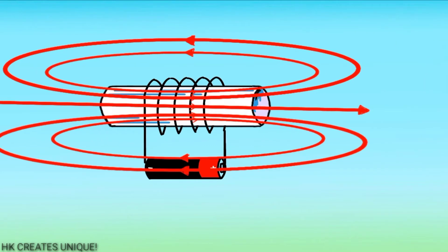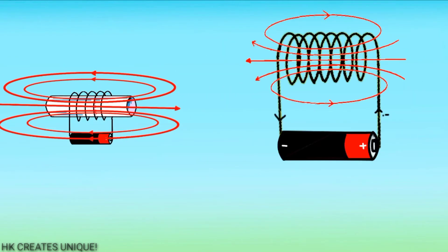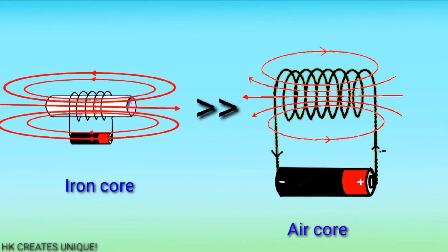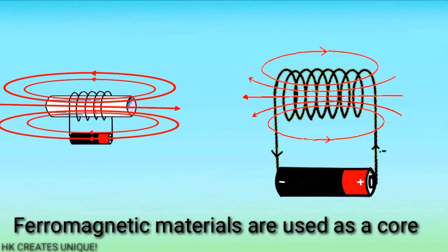And creates stronger magnetic field. The result is an electromagnet having much more strength compared to an air core electromagnet. So ferromagnetic materials are used as a core for an electromagnet.